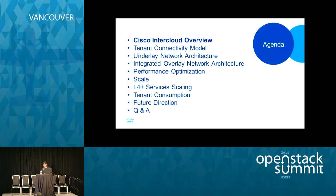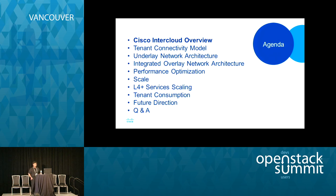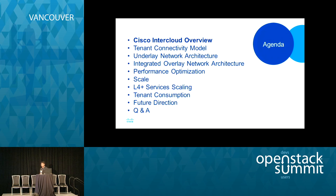Here is a quick agenda. Before I dive into the inter-cloud network architecture and scale, I'll give a 30,000 feet overview of what InterCloud is all about. Then I'll go over the tenant network connectivity model, which is driven by our tenants and customers — internal SaaS application providers and alliance partners. Then I'll talk about the network architecture, addressing requirements through underlay as well as overlay.